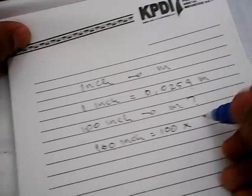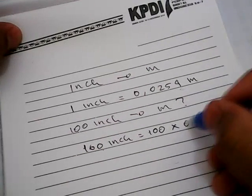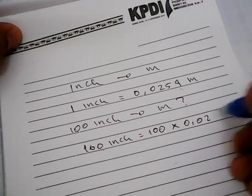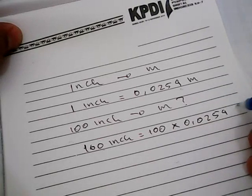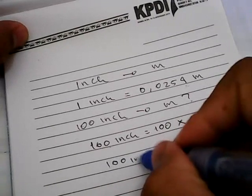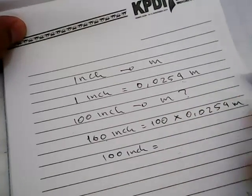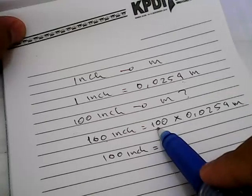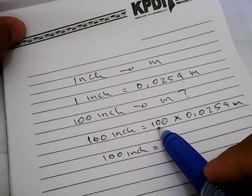Let's write down that number: 0.0254 meters. So, 100 inch is equal to, how much is it?